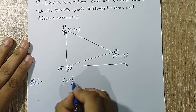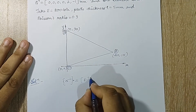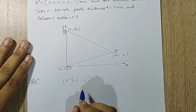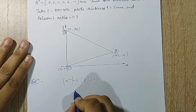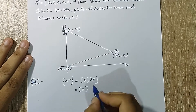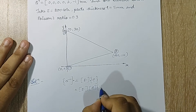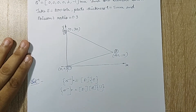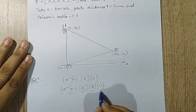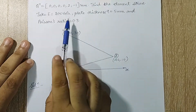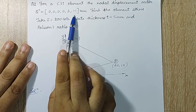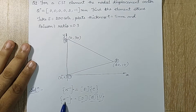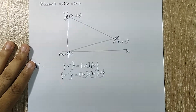Stress is given by D times strain. The strain term can be replaced as B times u — this is an equation we have already derived. I have to find D and B; u is already given as the displacement values. Once I have those two, I can find the value of stresses, sigma.